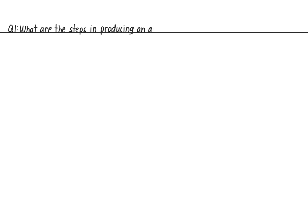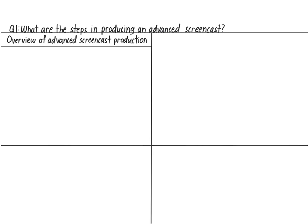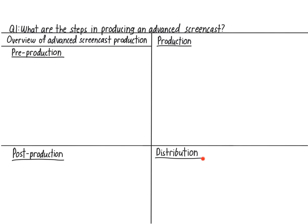The question I'll address in this video is: what are the steps for producing an advanced screencast? Video production is generally split into three parts: pre-production, production, and post-production. You'll also need to distribute your video so your students can view it.